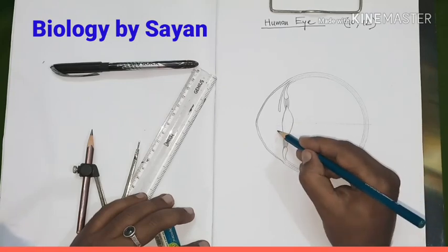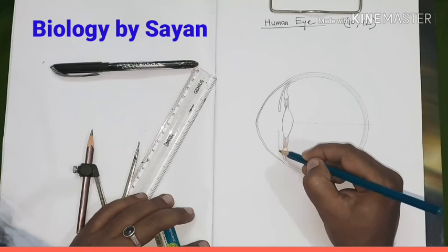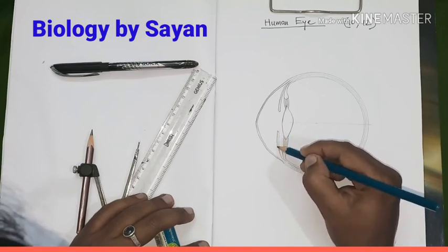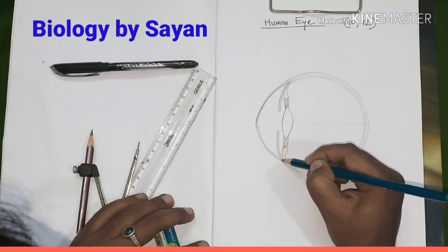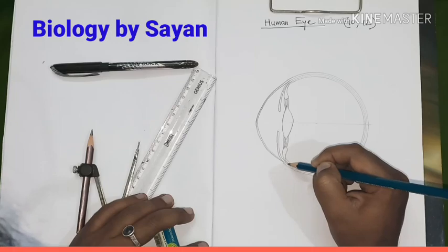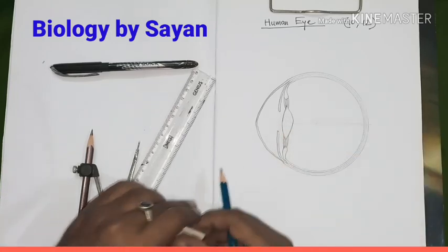Same thing at the bottom too. A thin muscular flap like structure. Arising from the second and third circle. This is the iris.